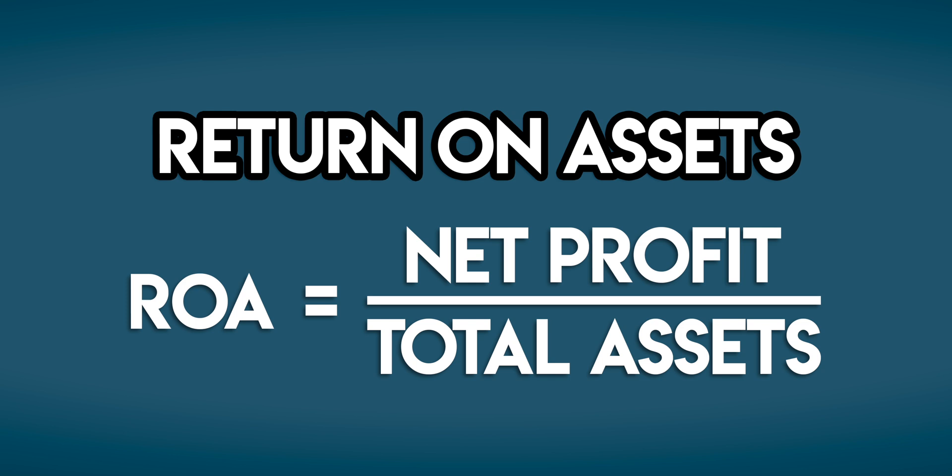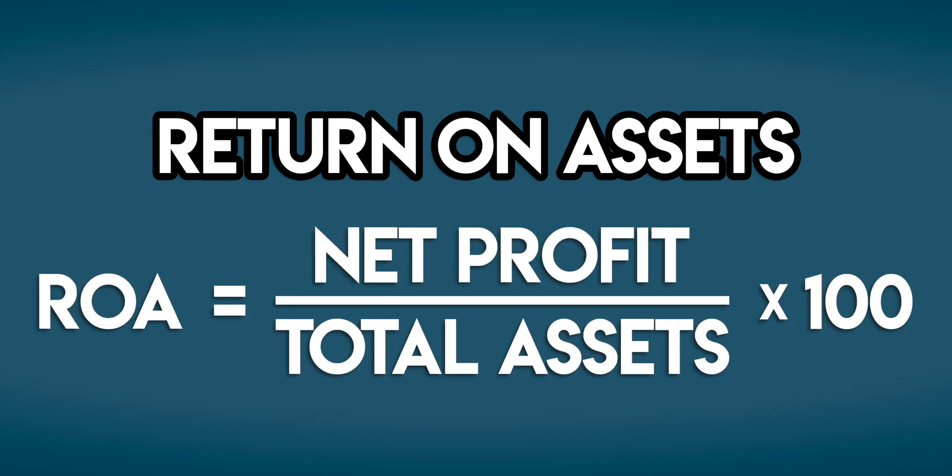This is a profitability ratio that we usually express as a percentage. Whenever that's the case, remember to multiply by 100. You can find this formula on my profitability ratios cheat sheet — the link is in the description.